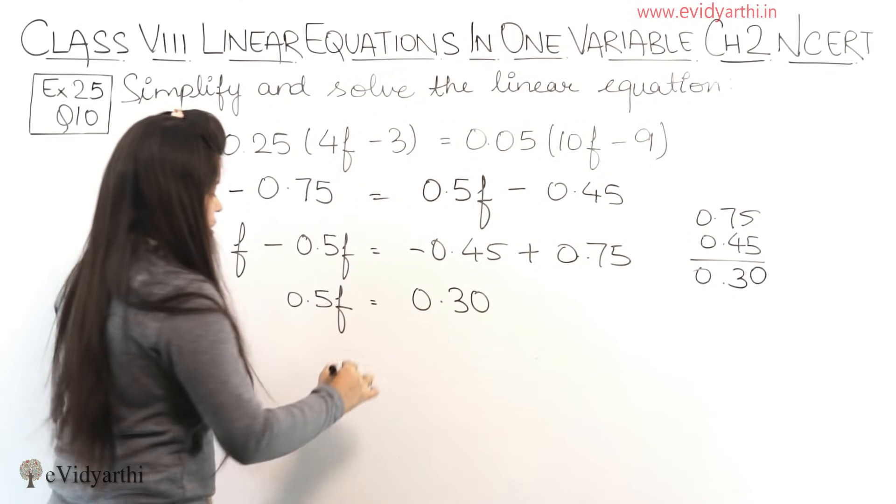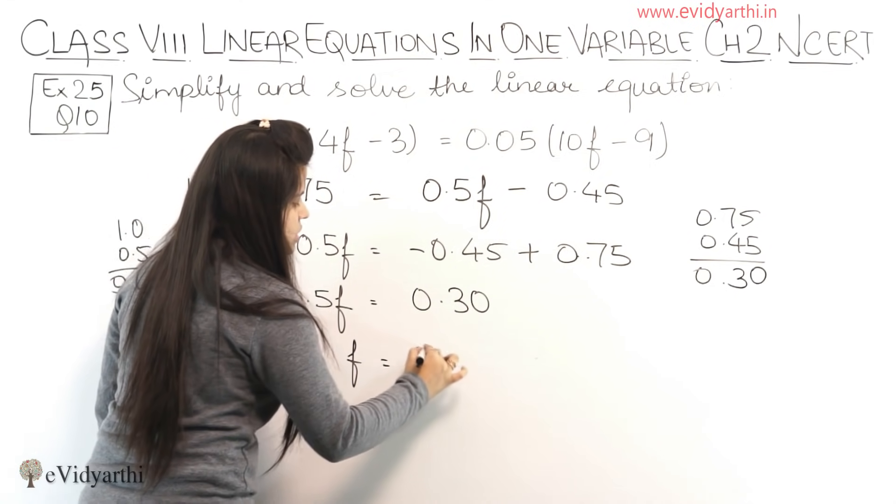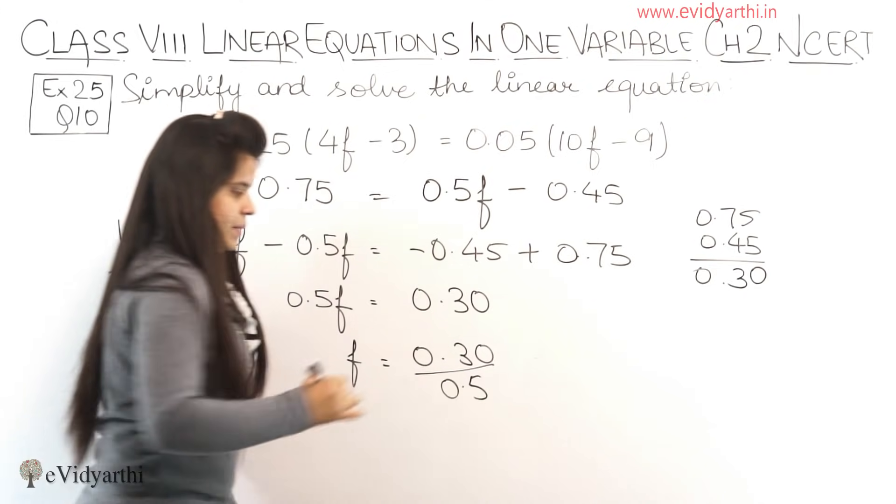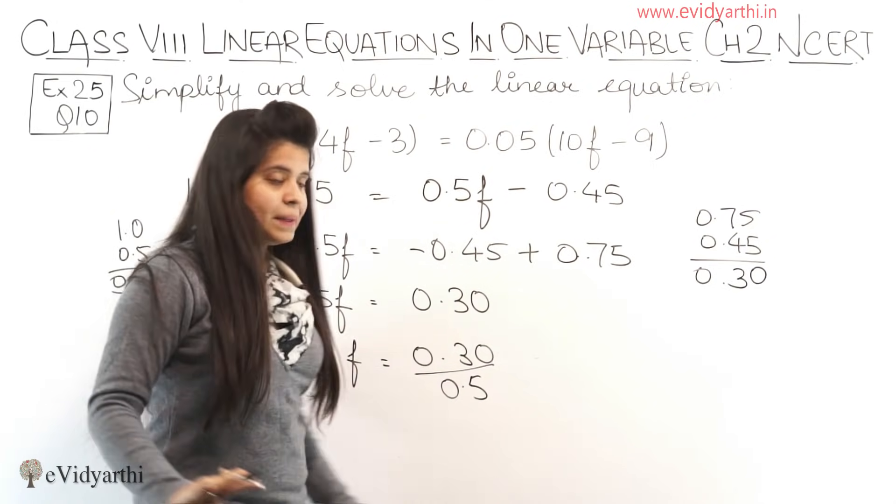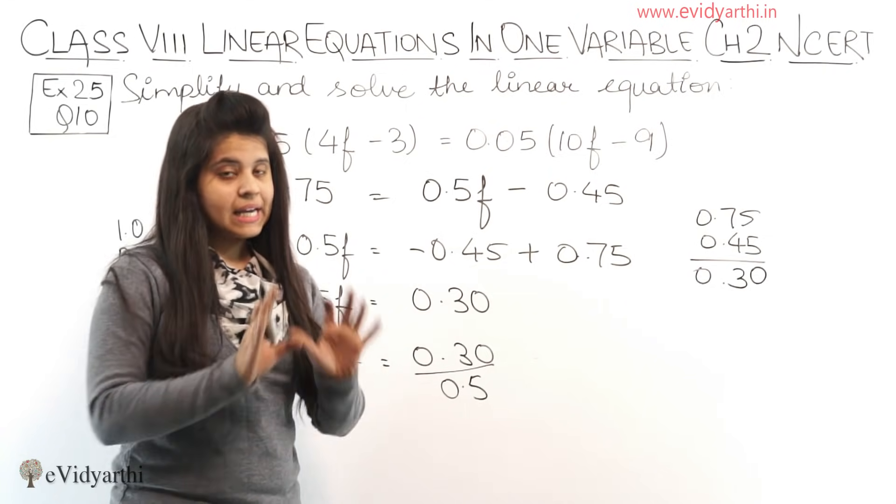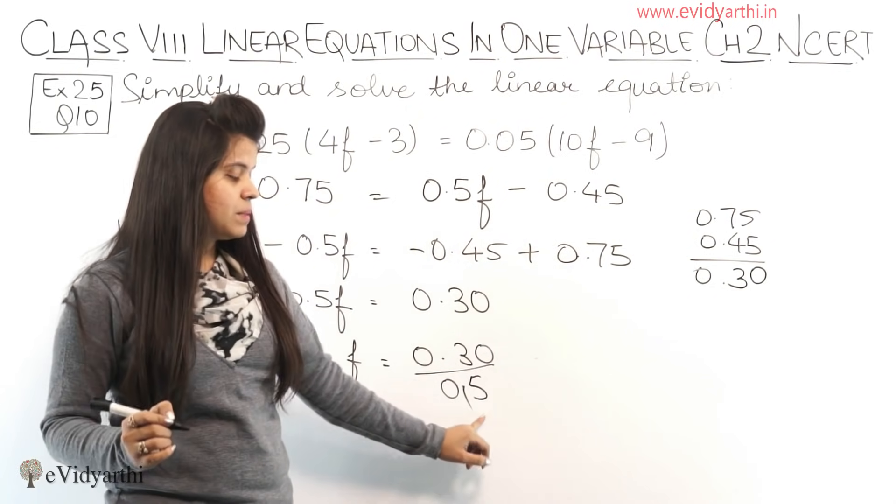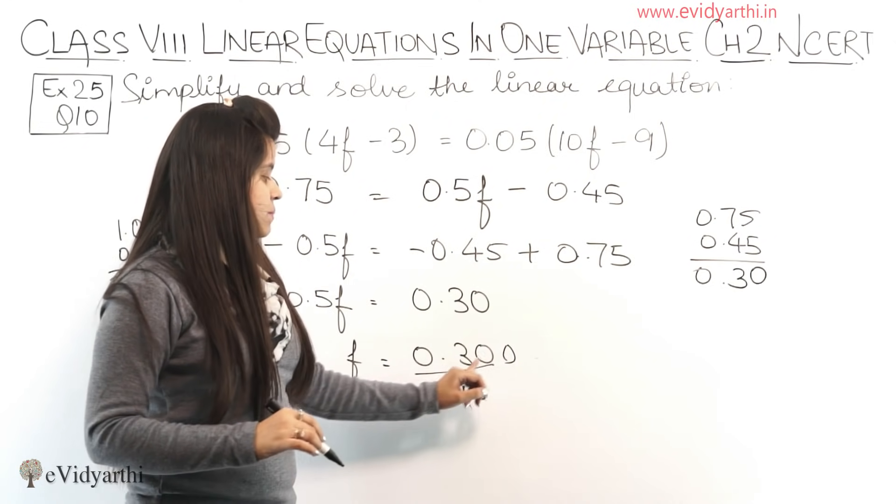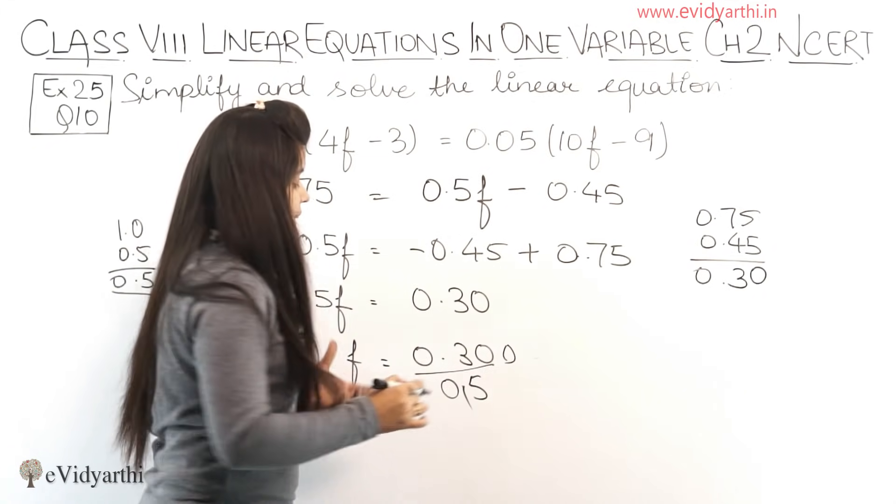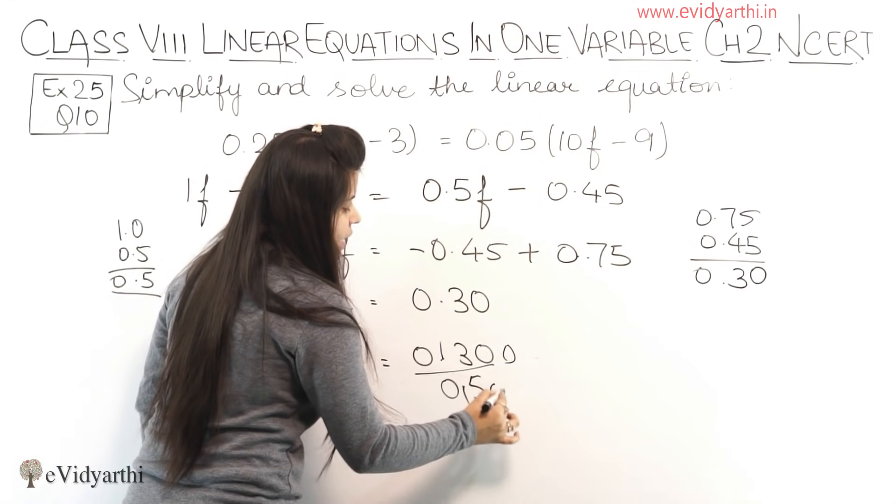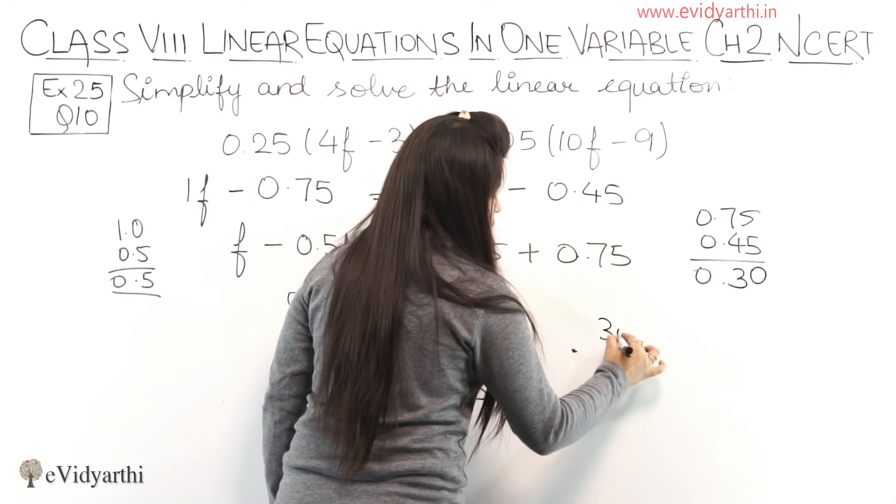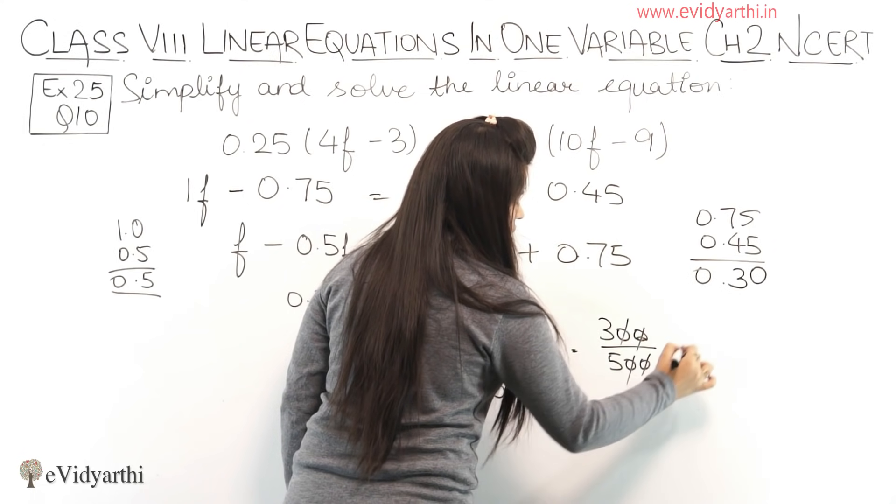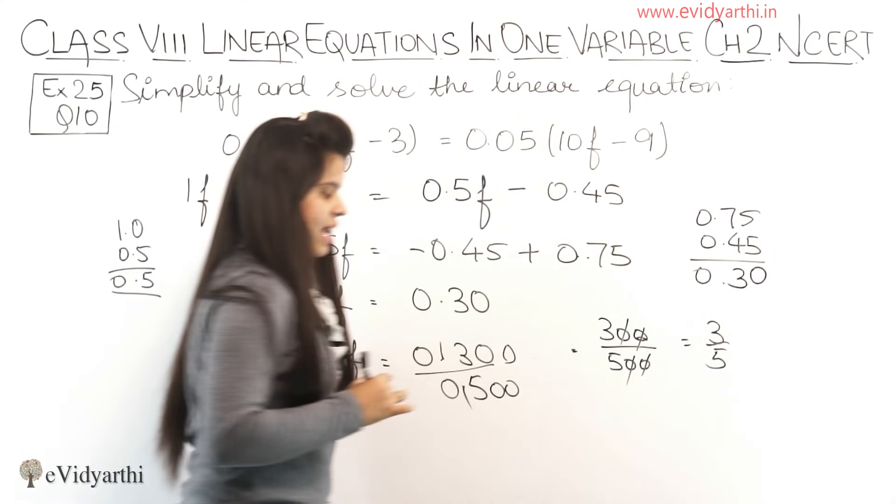Now we have to find f. So f will be equal to 0.30 divided by 0.5. We won't complicate this. Simply we remove the decimal and put 0s. From here, decimal removed, after decimal there's one number, so we put one 0 on top. And here after decimal there are two numbers, so decimal removed and two 0s. So now we have 300 upon 500. 0 cancels with 0, 0 cancels with 0. We have 3 upon 5.